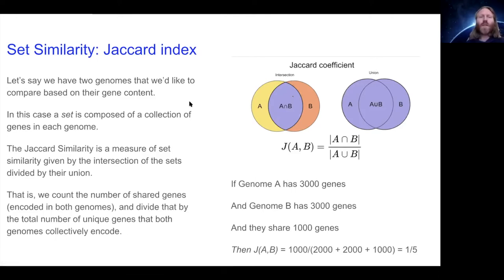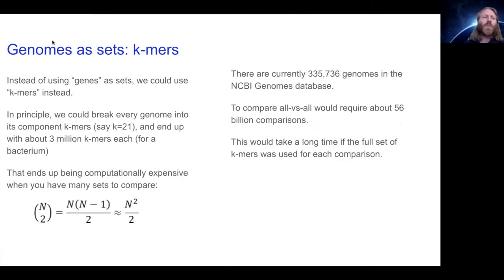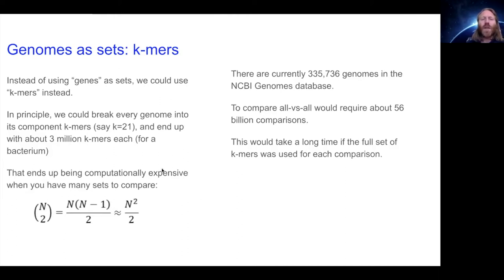Overall that would be 1,000 divided by 2,000 plus 2,000 plus 1,000, which equals one-fifth, so our Jaccard index is 0.2. We can do that with genes, protein content, or whatever we're interested in. A lot of times we'll use k-mers — in principle we could break each genome into its component k-mers. If k equals 21, we'd end up with maybe a couple million unique k-mers for each genome, then do the same computation comparing all k-mers against all k-mers in the other genome to estimate the Jaccard index.